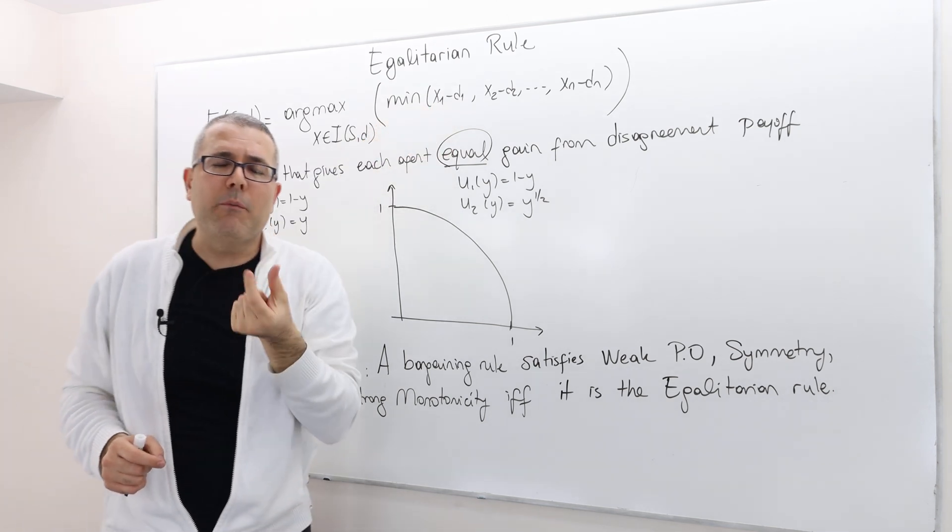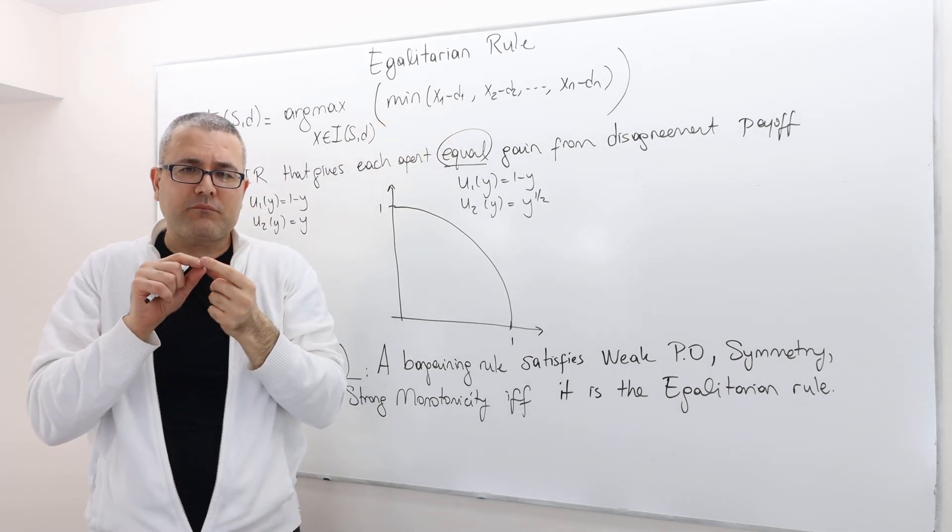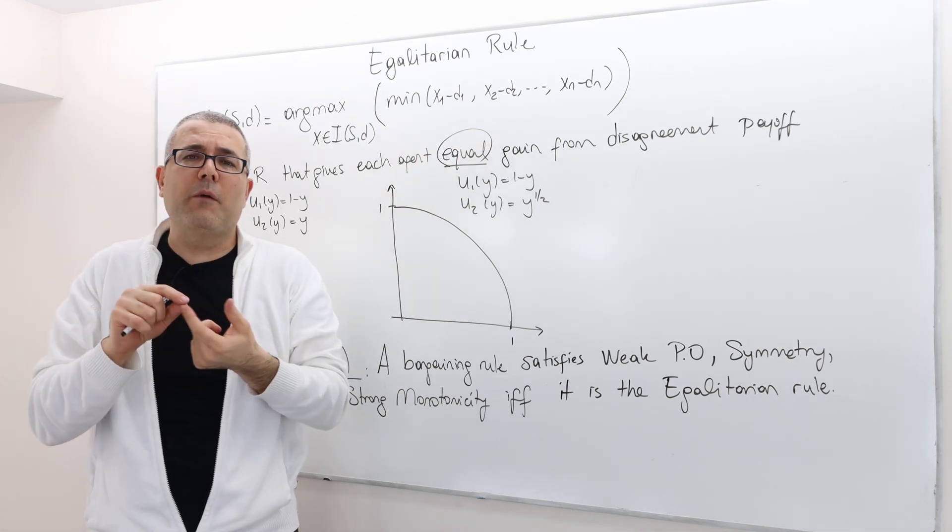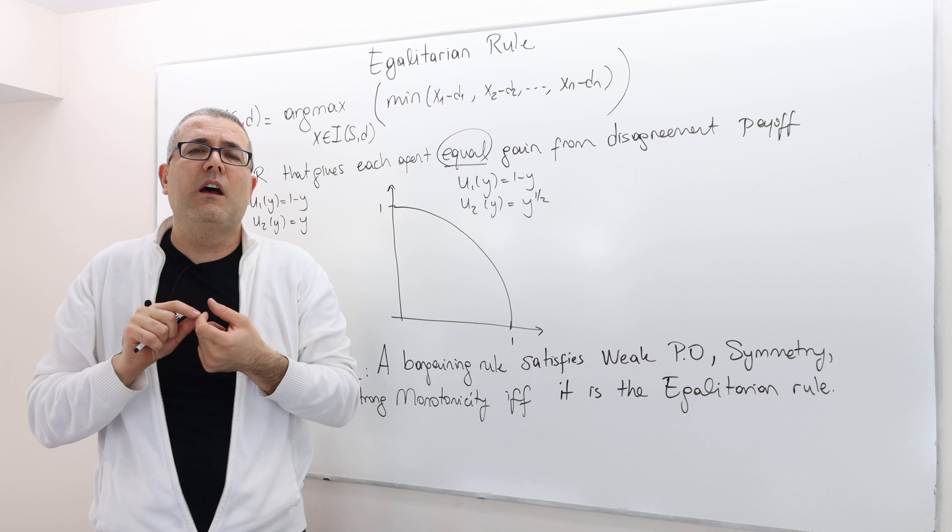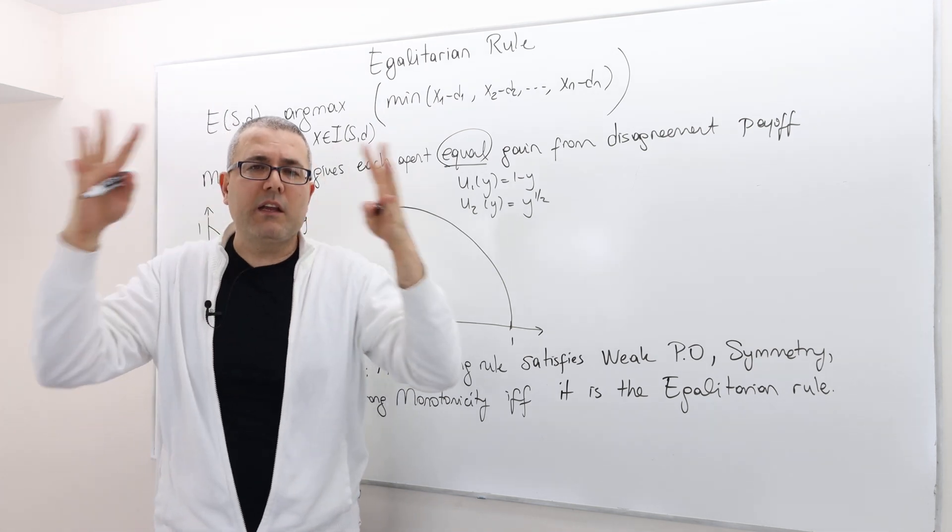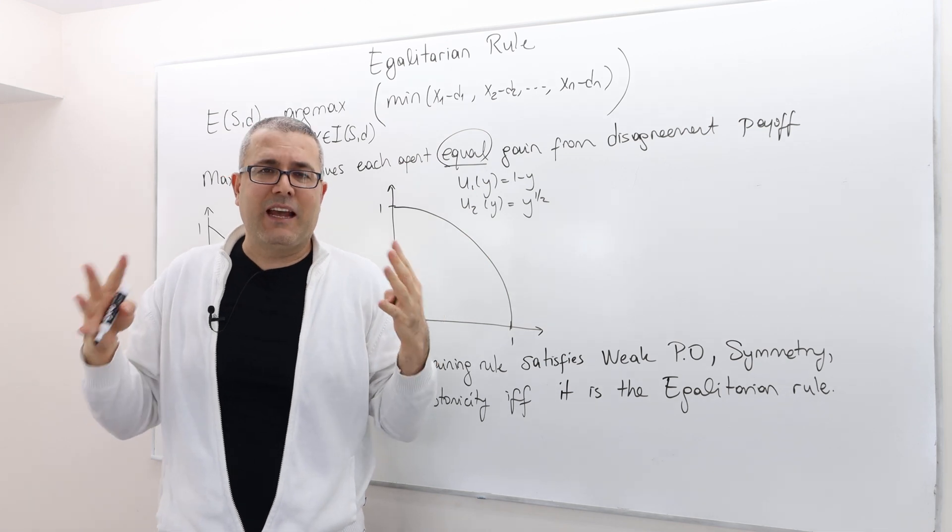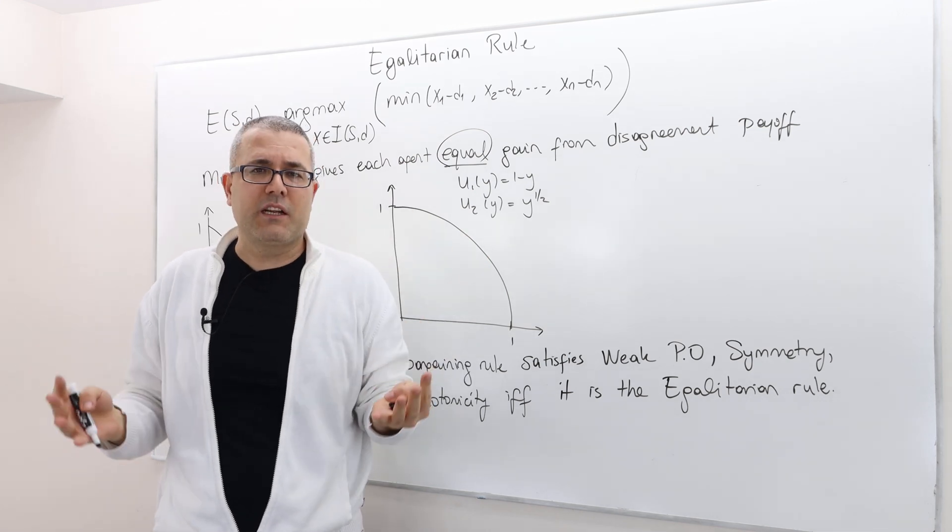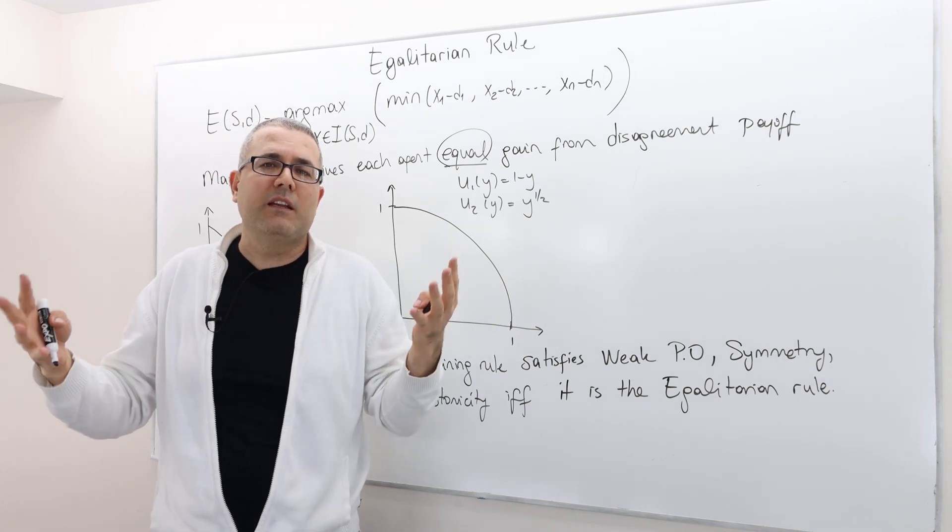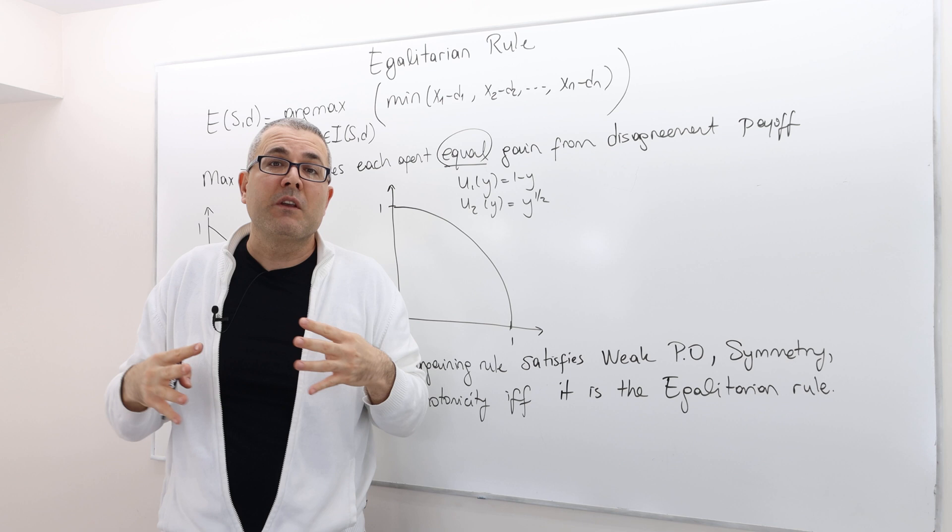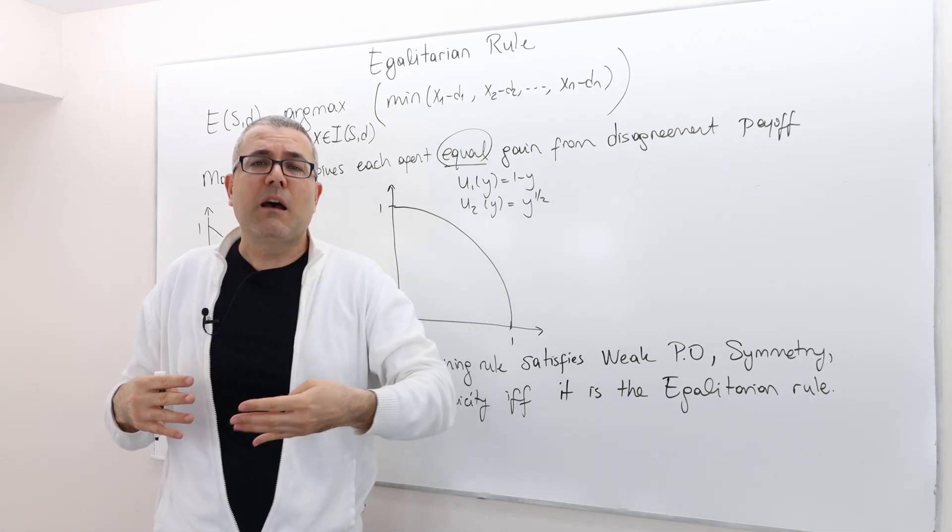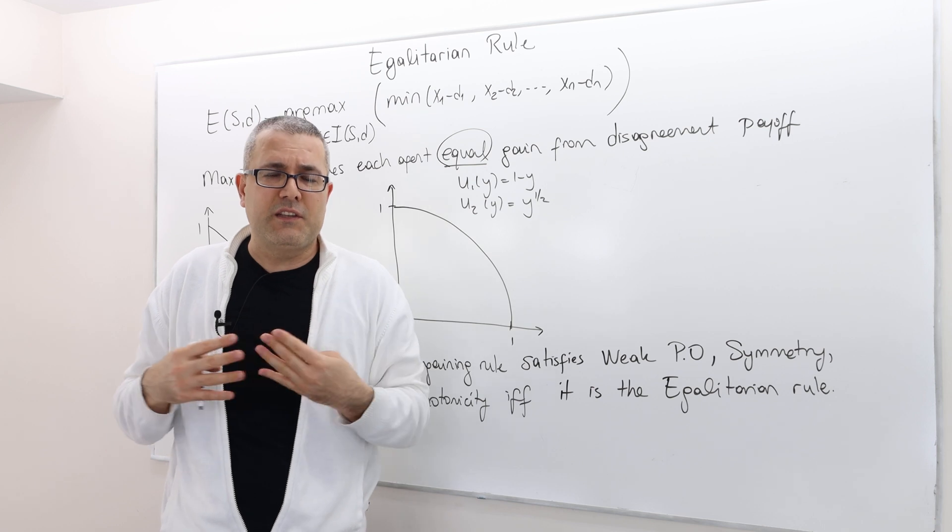So x1 minus d1 is how much player one is going to get on top of his disagreement. x2 minus d2, how much agent two is going to get on top of his disagreement point. So think it this way. The bargaining is like a cake that the negotiators are going to share. If they don't share it or if they cannot make an agreement, they're going to get their disagreement points. So sharing this cake basically means they're going to get something on top of their disagreement points.